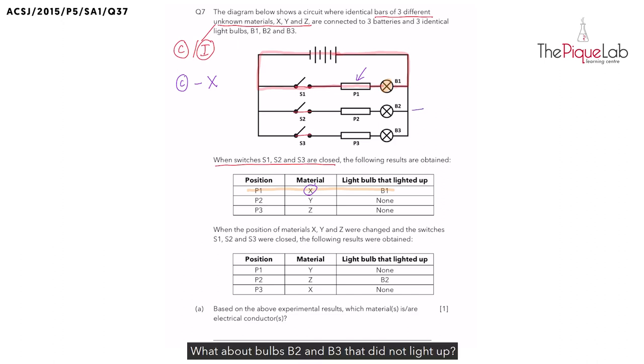What about bulbs B2 and B3 that did not light up? Did electricity flow through these bulbs? No it did not. So did materials Y and Z allow electricity to flow through them? No it did not. So I'm going to put them in the possible insulators here. We have Y and Z.